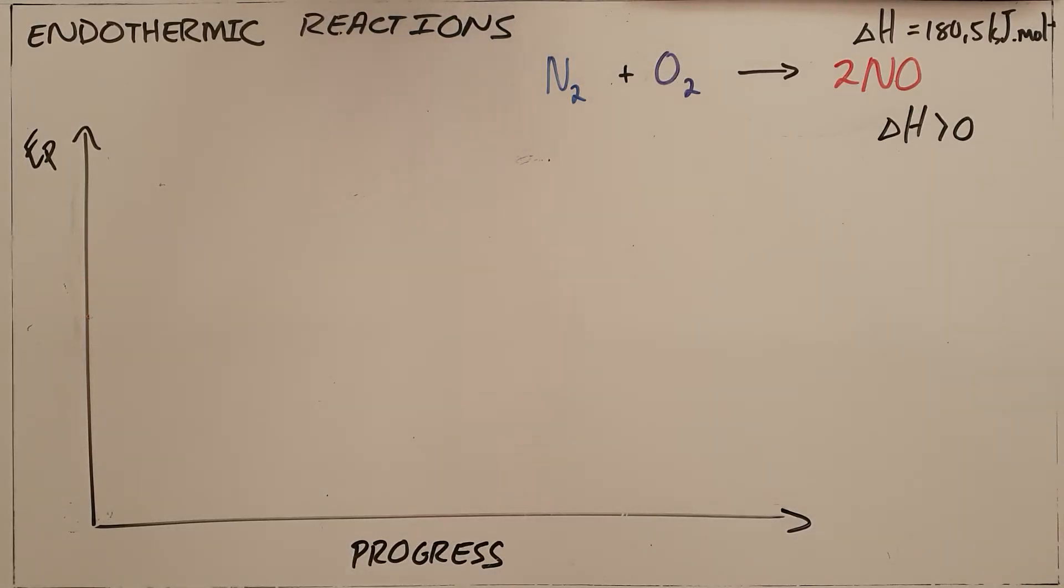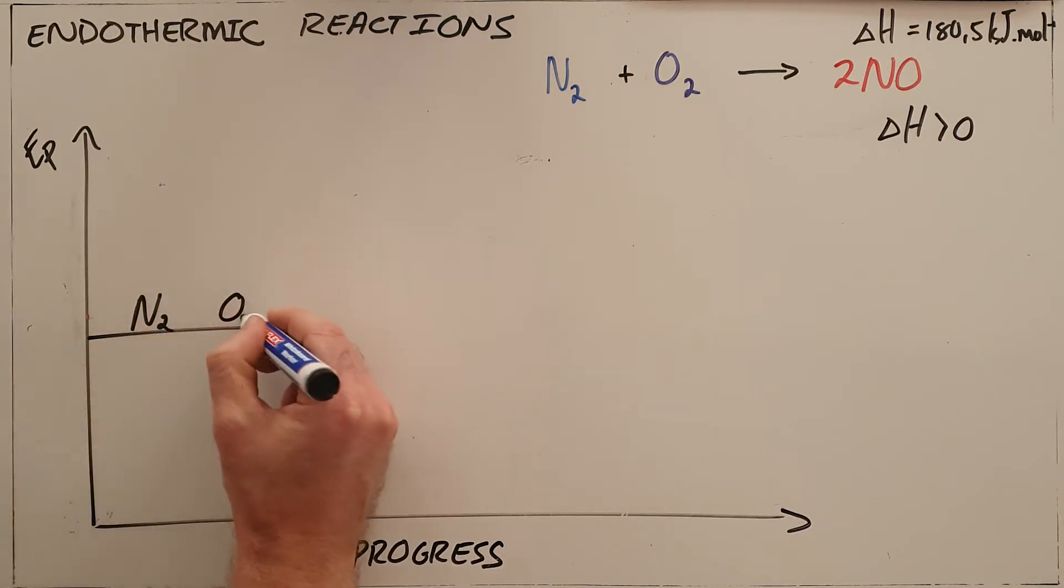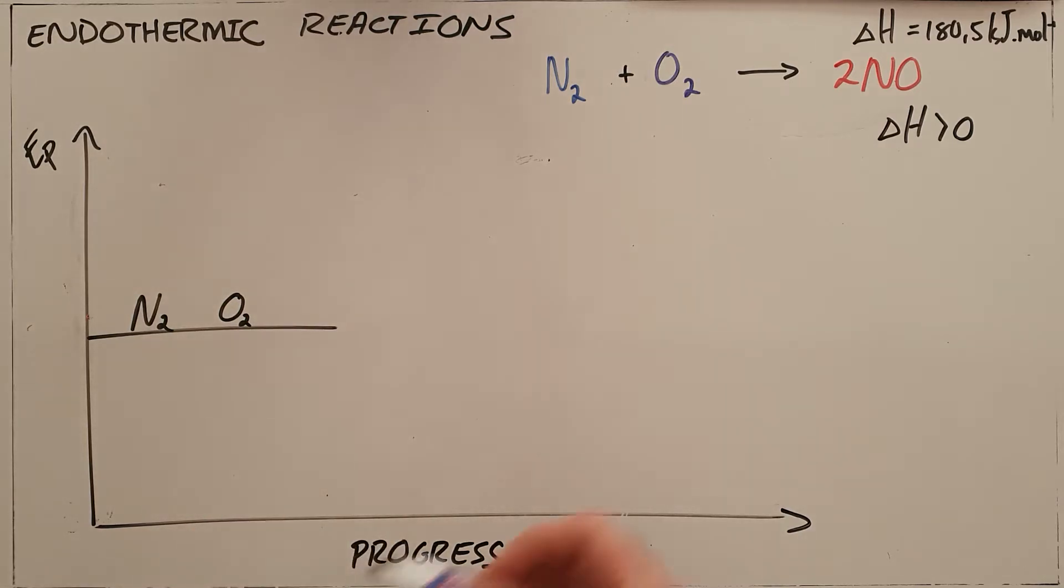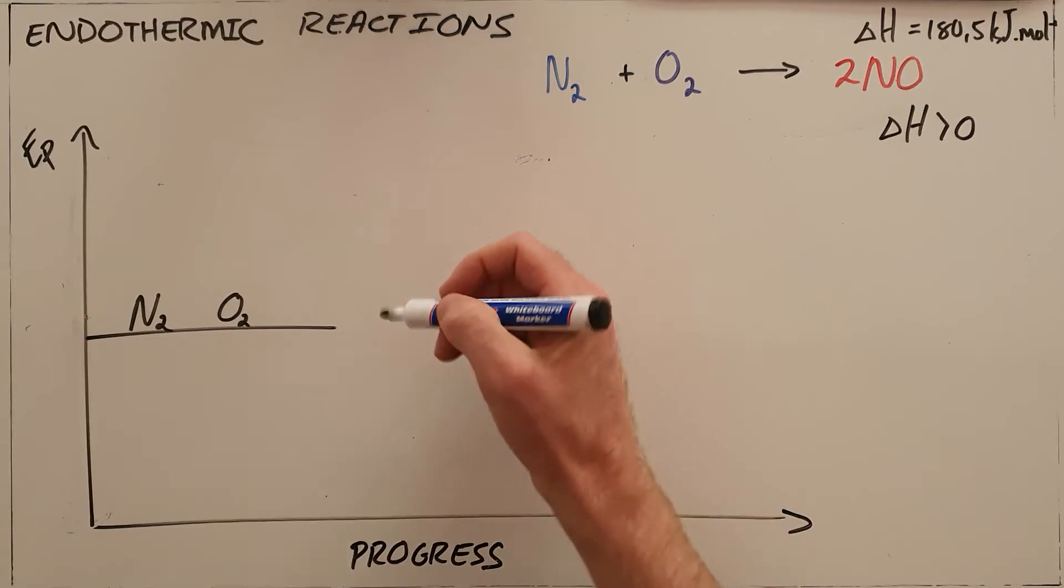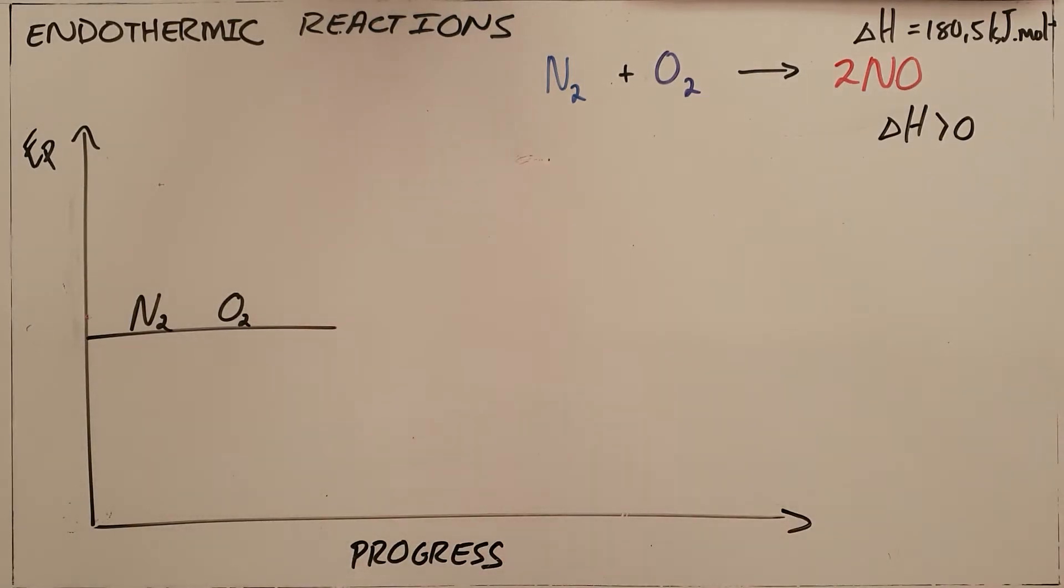We know that all reactants will have a certain amount of energy as a result of the bonds that they have formed. In this example, our reactants are nitrogen and oxygen, which have a certain energy as a result of their bonds. We also know that in order for a reaction to happen by collision theory, those two particles must collide with each other.